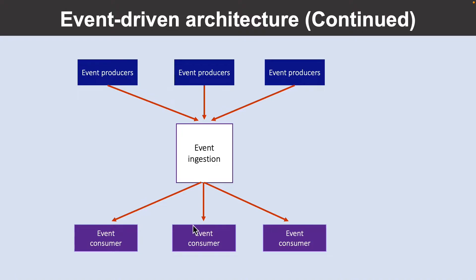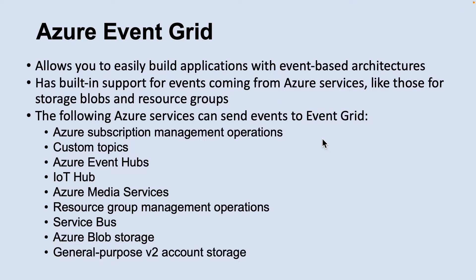In this logical diagram each type of consumer is shown as a single box. In practice it's common to have multiple instances of a consumer to avoid having the consumer become a single point of failure. Multiple instances might also be necessary to handle the volume and frequency of events. A single consumer might process events on multiple threads, which can create challenges if events must be processed in order or require exactly-once semantics. So what is Azure Event Grid?